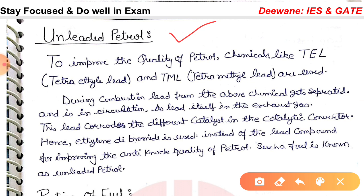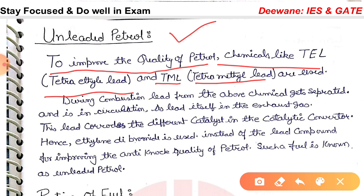To improve the anti-knock quality of petrol, chemicals like TEL (tetraethyl lead) and TML (tetramethyl lead) are used. During combustion, lead from these chemicals gets separated and ends up in the exhaust gas.